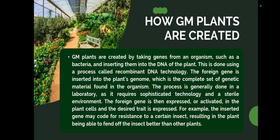The next main thing is how genetically modified plants are created. GM plants are created by taking genes from one organism and then inserting them into another organism, such as a plant. For example, we can take a gene from bacteria and insert it into the DNA of a plant. This is done using a process called recombinant DNA technology.